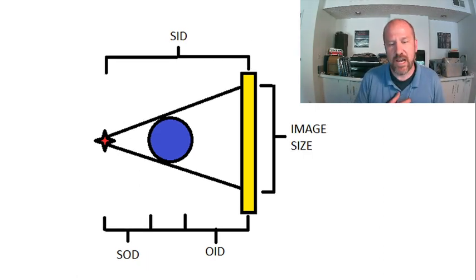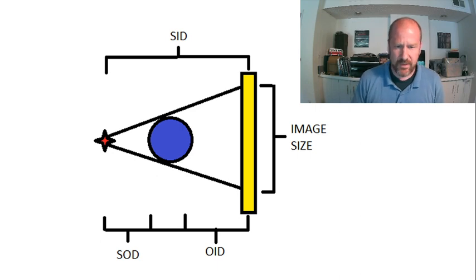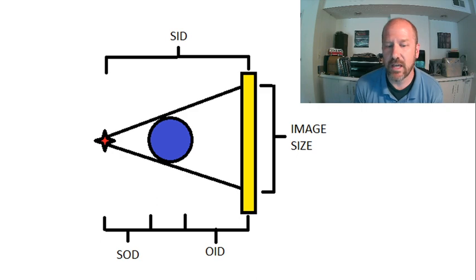So when we start to jack with the OID, but leave the SID constant, we can see that the image size increases quite a bit. And so the way this is typically discussed is that SID over SOD is a magnification factor. So we take the SID, we divide it by the SOD, and that will give us some magnification factor for how much that image size we would expect to increase. We would take the object size and multiply it by the magnification factor to get the image size.